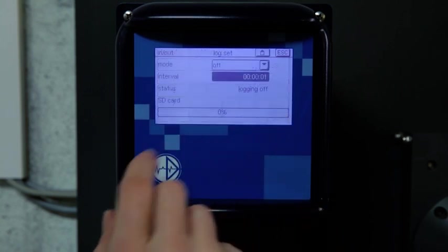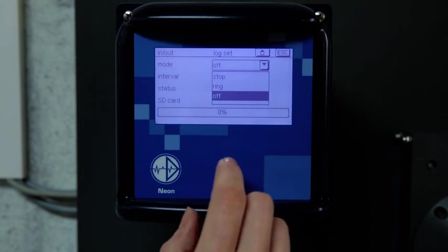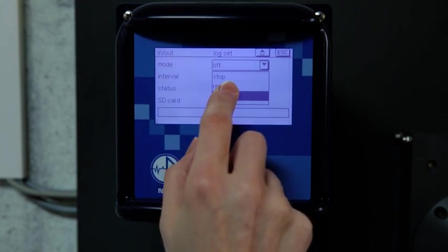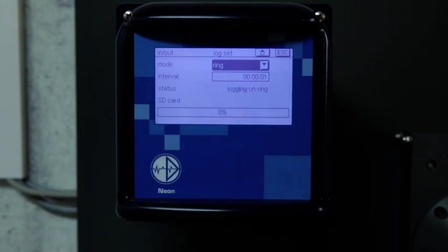If the memory card is full, logging will either be stopped or older data overwritten, depending on your specific settings. The storage space is indicated by an analog bar.